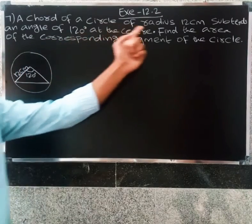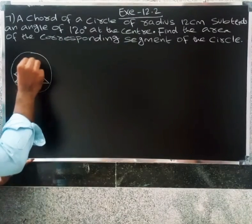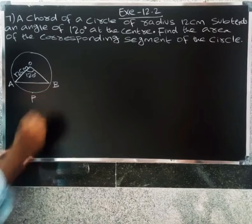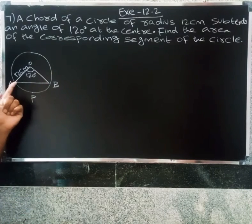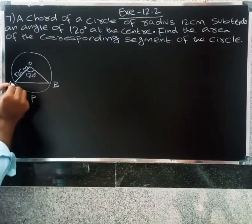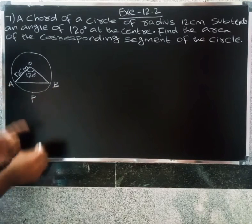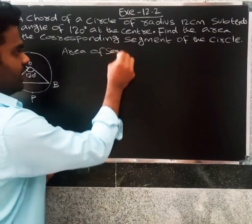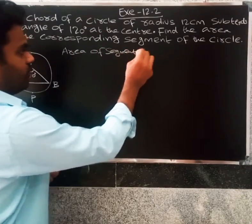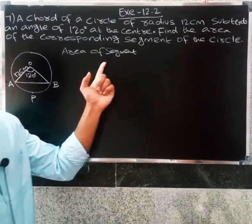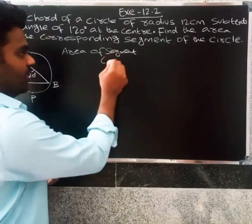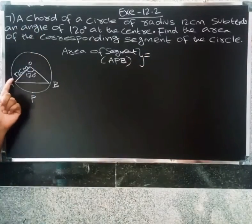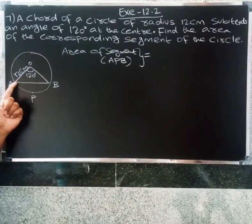We need to find the area of the corresponding segment of the circle. The formula for the area of a segment is: area of a segment equals area of a sector minus area of a triangle.